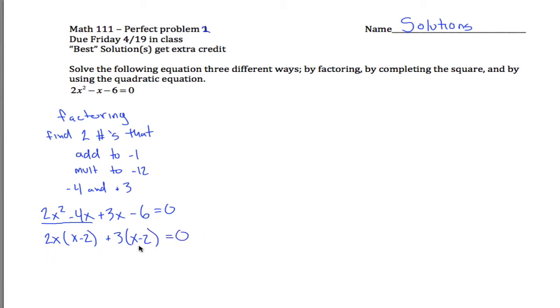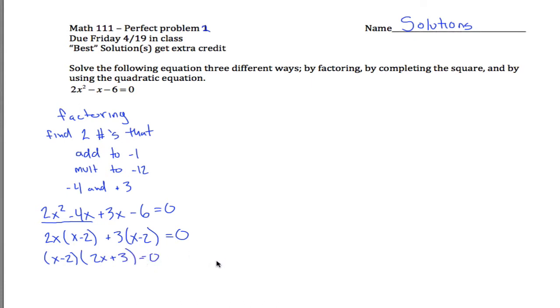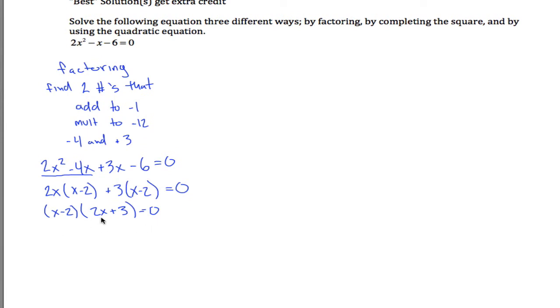Now you can factor out the (x - 2) and you're left with (x - 2)(2x + 3) = 0. So either x - 2 = 0 or 2x + 3 = 0, which means x = 2 or 2x = -3, so x = -3/2. The solutions to this equation are x = 2 and x = -3/2.